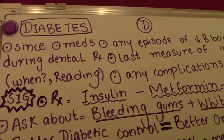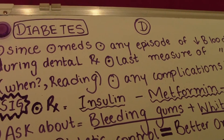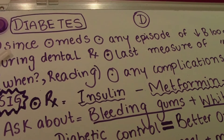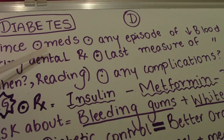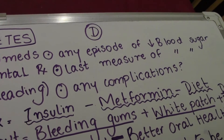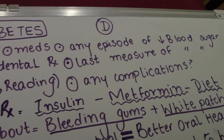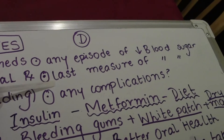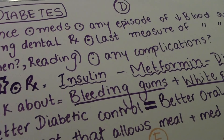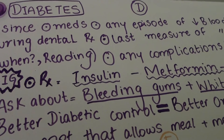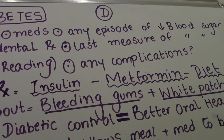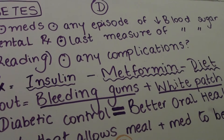The next condition we're discussing is diabetes. With diabetes, we ask since when have they been diabetic, if they're taking any medications for it, have they had any episodes of decreased blood sugar or hypoglycemia during any dental treatment, and when was the last time they measured their blood sugar level and what was the reading — so ask both when the reading was taken and what the reading was.